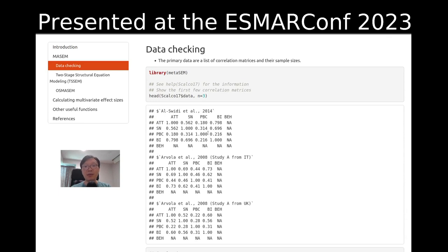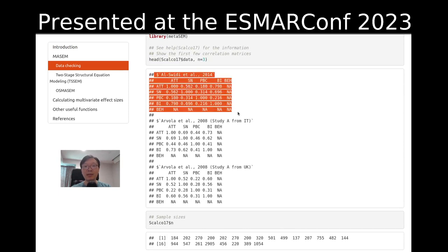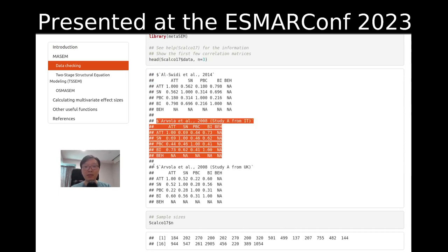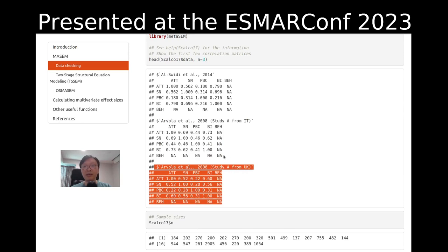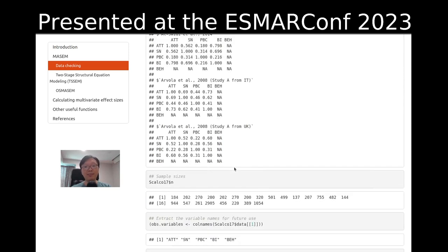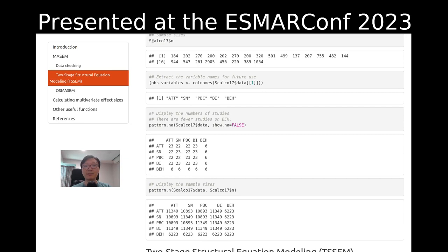First of all, we load the package and also the data frame. The primary data are the list of correlation matrices and their sample sizes. Here are three correlation matrices listed. Please note that there are also missing data, represented by NA. Here are the sample sizes. We also extract the variable names for future use.